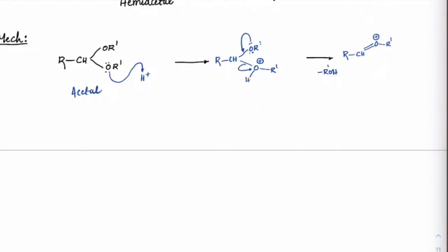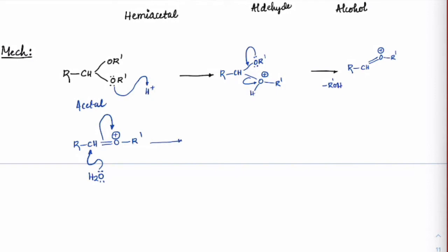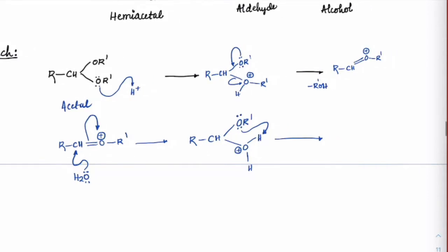Now the remaining group: we have RCH double bond OR⁺. Water will attack on the carbon because carbon has sufficient delta positive charge. As soon as it attacks, we get RCH with OR group, and OH₂⁺. The lone pair on oxygen here will immediately get protonated within the molecule — what we call an intramolecular proton transfer.